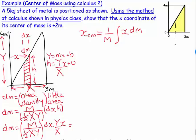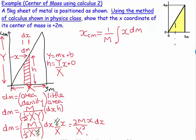Simplifying, the big Y cancels out, and the one-half becomes a two in the numerator. So dm equals two M over big X squared times little x dx. This gives dm entirely in terms of constants and the variable little x, which is exactly what we need.